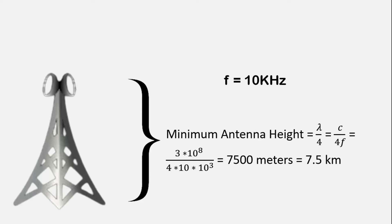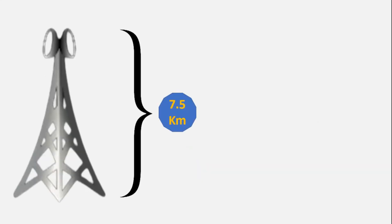So now we just put the value of C, that is 3 into 10 to the power 8, and we are also putting the value of F which is 10 kHz here. After this calculation we will get 7500 meters. If we convert this into kilometers, it will become 7.5 kilometers. The antenna of this height is practically impossible to install.